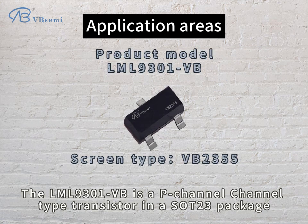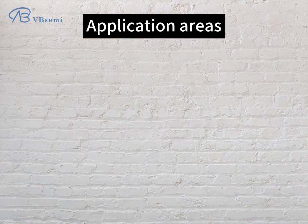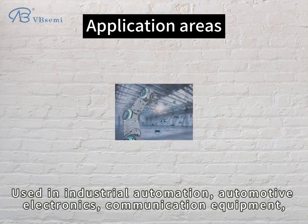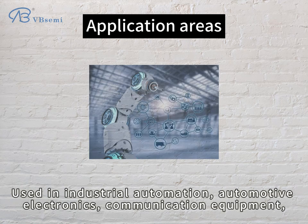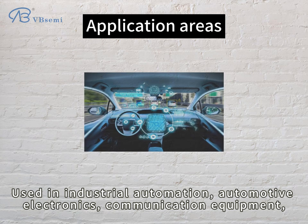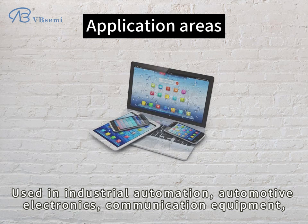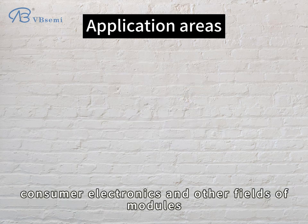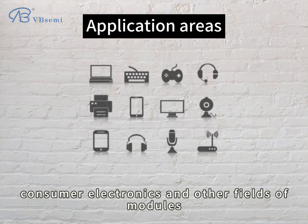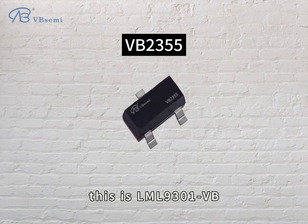The LML930EVB is a P-Channel transistor in a SOT23 package, used in industrial automation, automotive electronics, communication equipment, consumer electronics, and other fields. This is the LML930EVB.